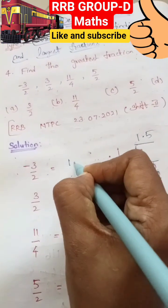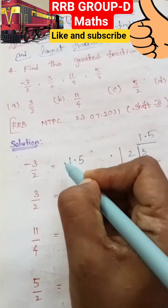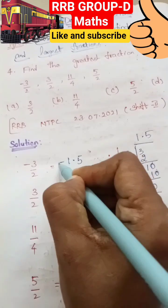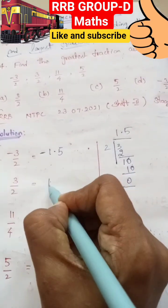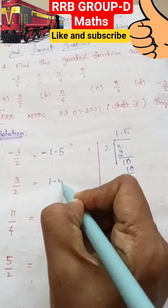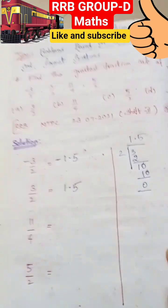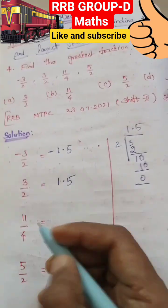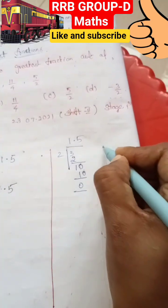So 1.5. The 1.5 value with a negative sign is minus 1.5. Next, 3 by 2 is 1.5 value with a positive sign. So 1.5.